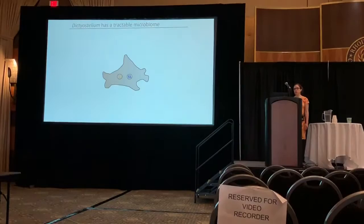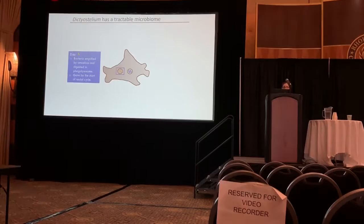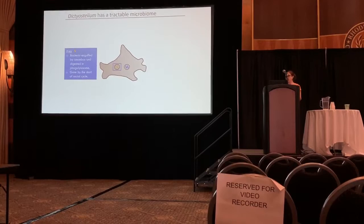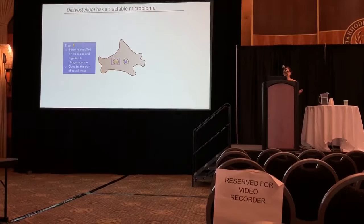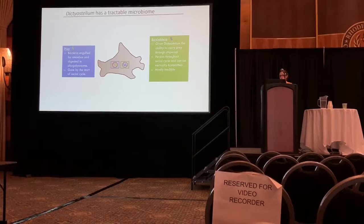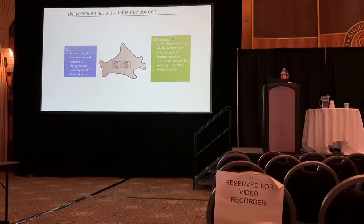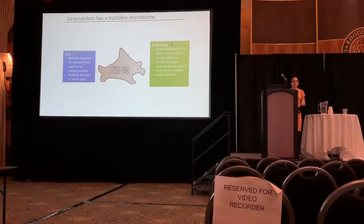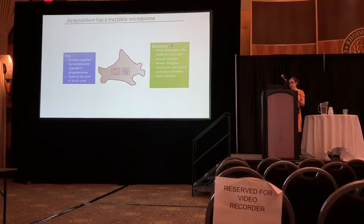What microbes is Dictyostelium carrying around with it? It's bacterivorous, so it eats up a lot of bacteria. Generally the absence of bacteria is what triggers the social cycle and migration — so that food is typically totally digested by the beginning of the social cycle and doesn't play much of a role in the rest of development. But our labs found there's also a specific Burkholderia symbiont which gives Dictyostelium the ability to carry a food supply around with it through its social cycle. Burkholderia isn't itself edible, but it prevents Dictyostelium from digesting all of its food and basically helps package snacks along with it throughout the development cycle.